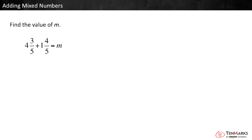One way to add mixed numbers is to break them apart into wholes and fractions. Let's try an example. Find the value of m. 4 and 3 fifths plus 1 and 4 fifths equals m.